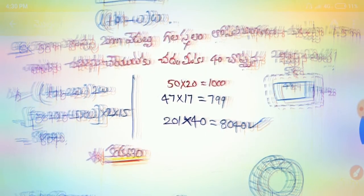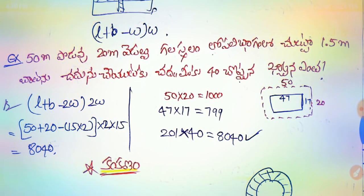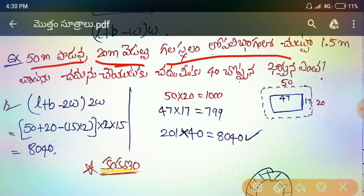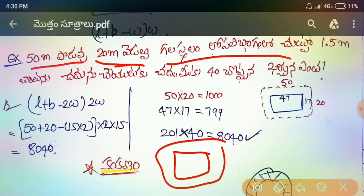Okay, let's take a look at the example. In the middle of the 50m, in the 20m, in the middle of the 20m. So, here is the X, in the middle of the 50m.